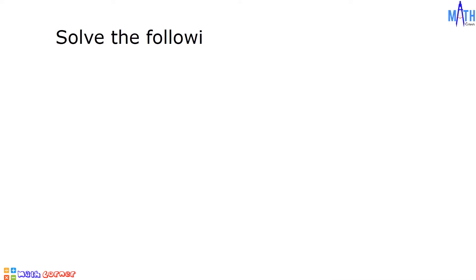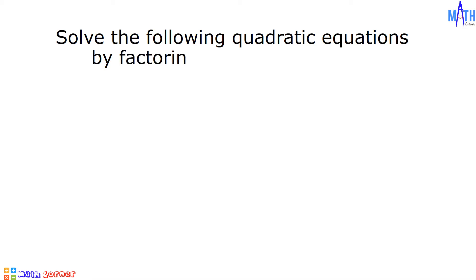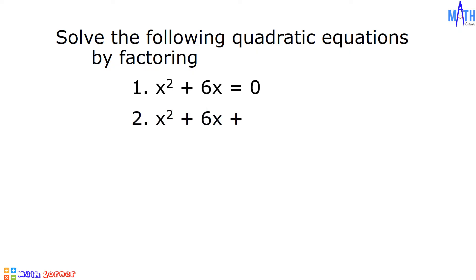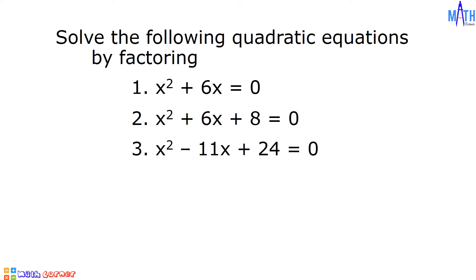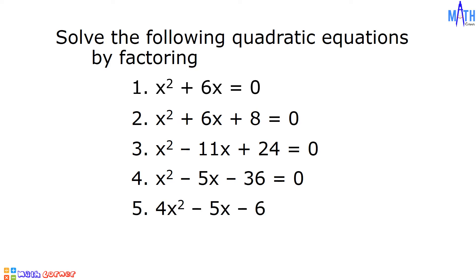Let us solve the following quadratic equations by factoring. Number 1: x squared plus 6x is equal to zero. Number 2: x squared plus 6x plus 8 is equal to zero. Number 3: x squared minus 11x plus 24 is equal to zero. Number 4: x squared minus 5x minus 36 is equal to zero. And number 5: 4x squared minus 5x minus 6 is equal to zero.